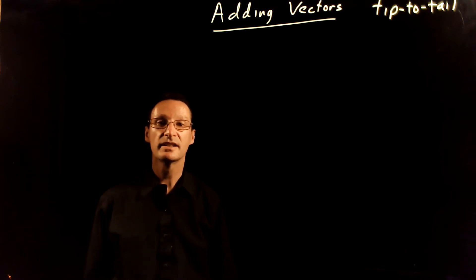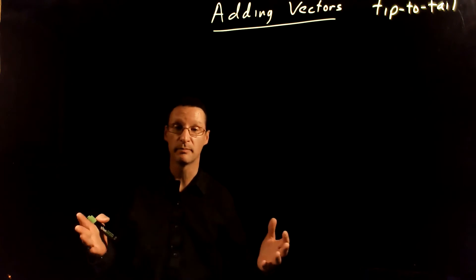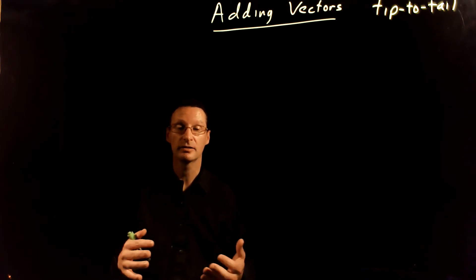Hey there, awesome physics students. Let's talk about how to add vectors together. We know how to add scalars. Scalars are just a number. So you just take them and you add them like normal numbers. We've done that all our lives.